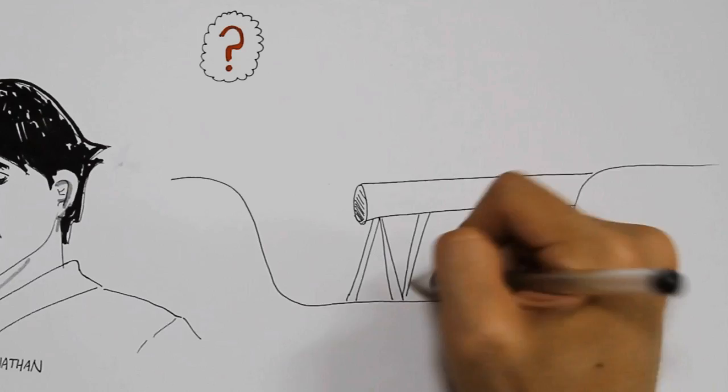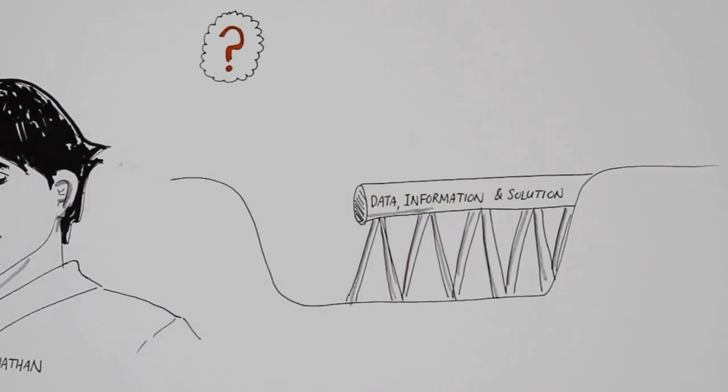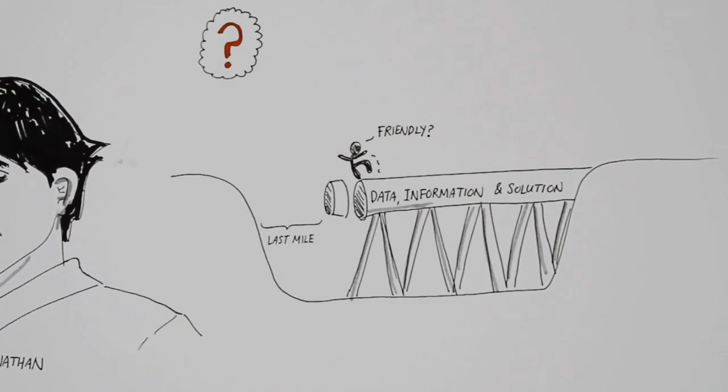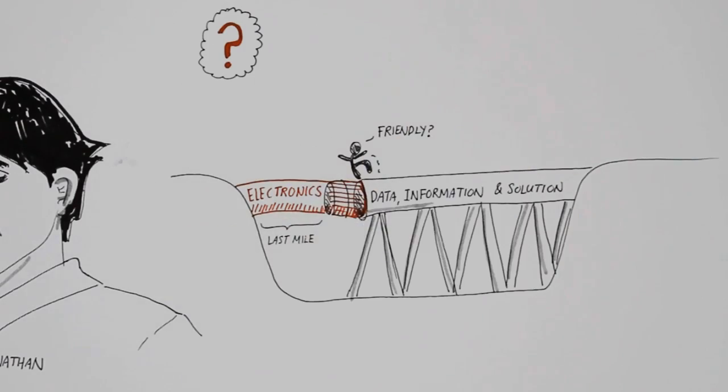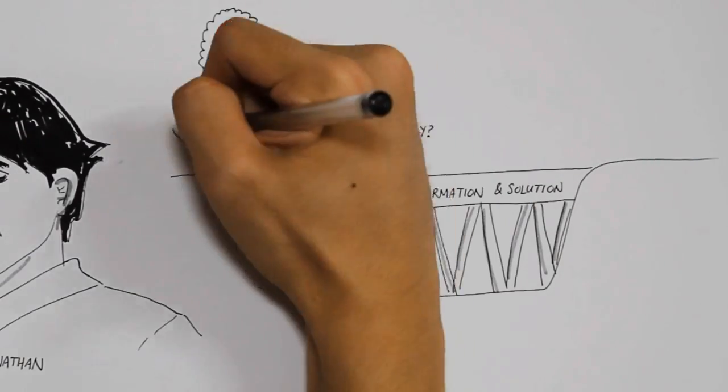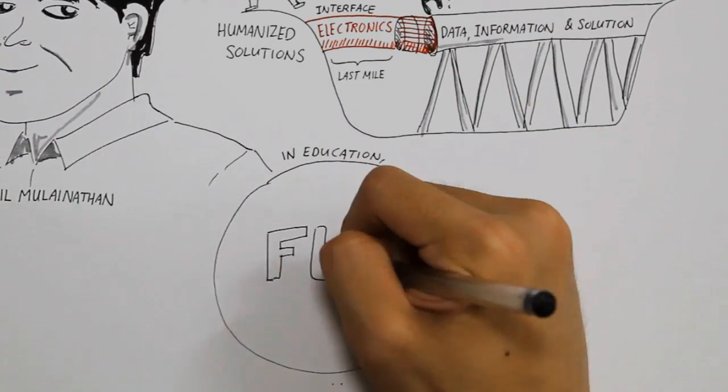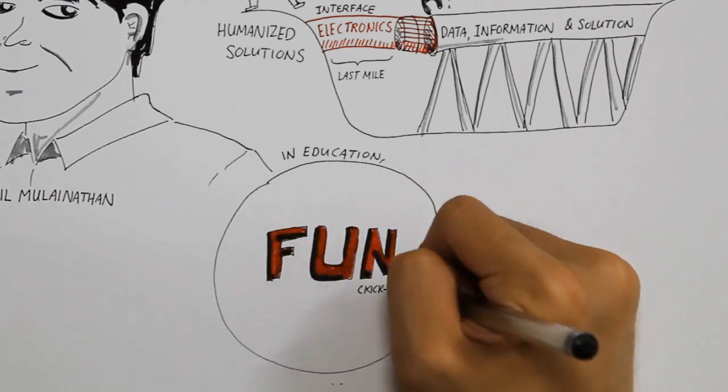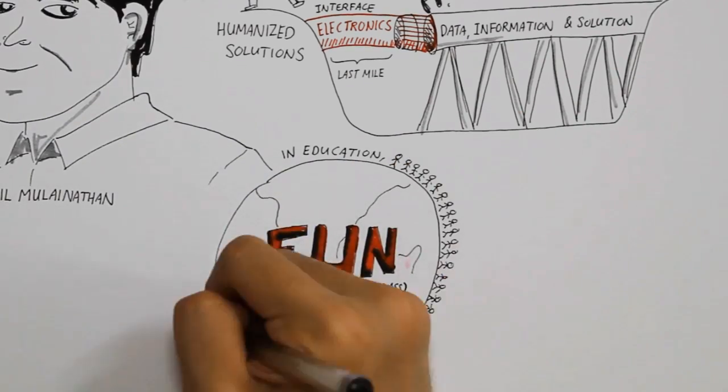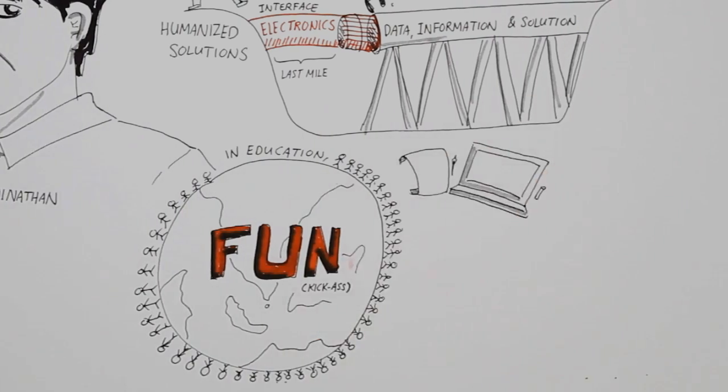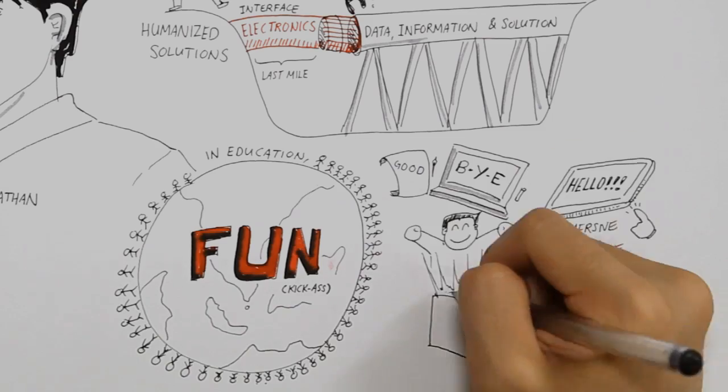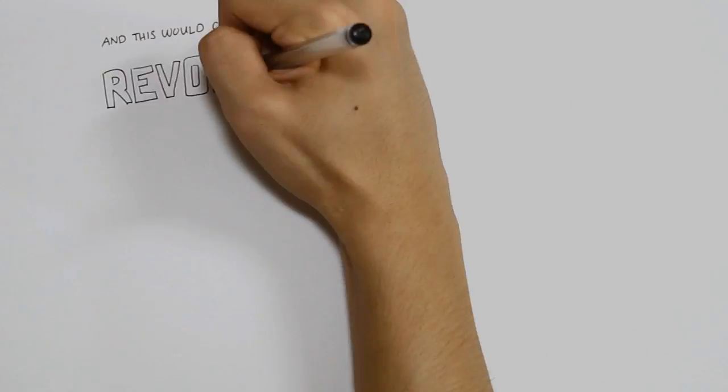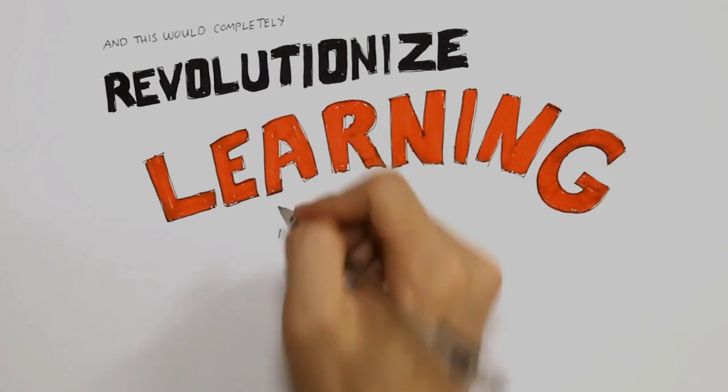It's that we've got data, information, and solutions in place. But we have stopped short of making these solutions friendly enough for actual use by the layman. That's precisely when electronics come in to bridge that gap, that gap of interface, humanizing these solutions. And in education, that means making learning kick-ass fun everywhere for everyone. Bid goodbye to paper and chalkboards, hello to multi-touch sensitive, immersive experience. Books that jump to life. And this would completely revolutionize learning as we know it.